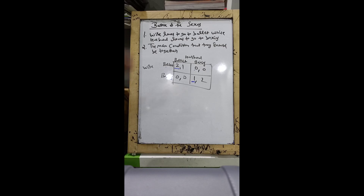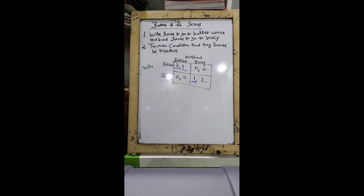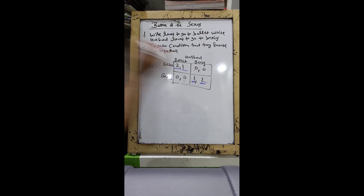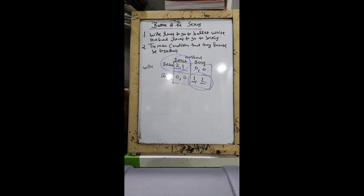Now we will play this game from the point of view of husband. Suppose husband thinks wife is going to go for ballet — husband chooses ballet. Suppose husband thinks wife is going to go for boxing — husband chooses boxing. We have got two points, ballet-ballet and boxing-boxing, where both options are underlined. So in this case we have got two Nash Equilibriums.